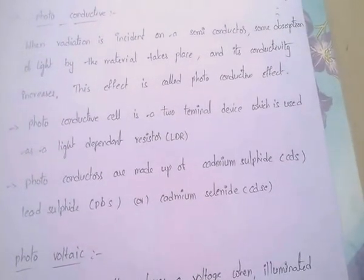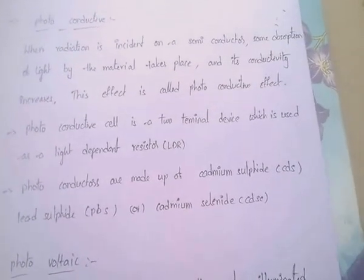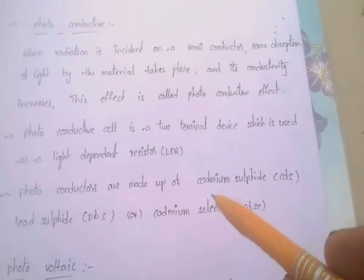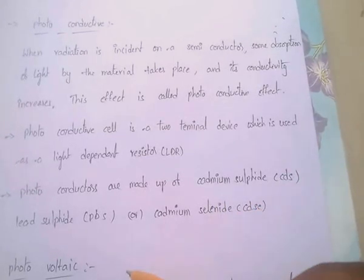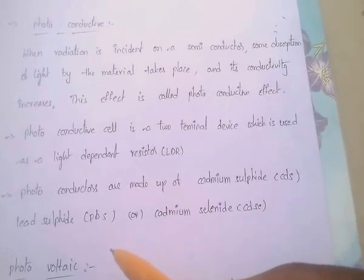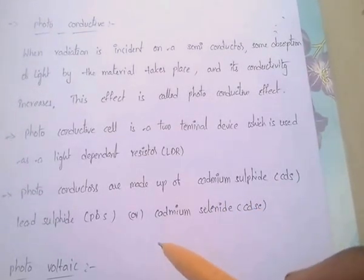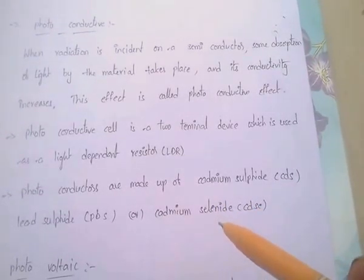The photoconductors are made up of cadmium sulphide, lead sulphide, or cadmium selenide.